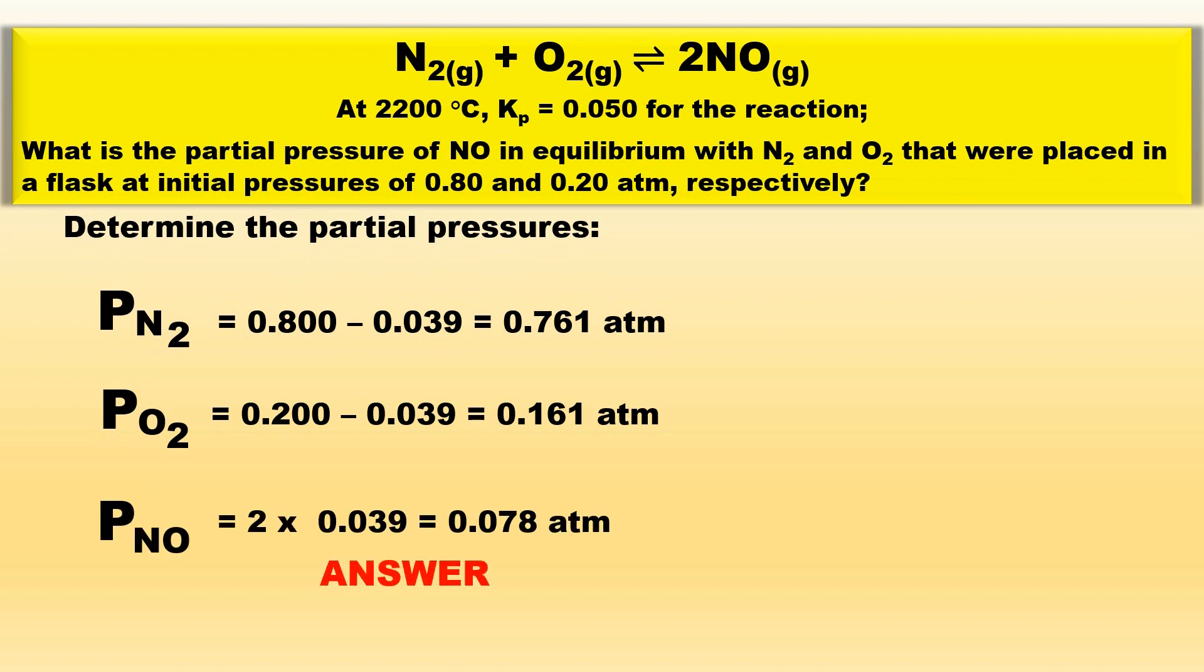And the PNO, the pressure of the nitrogen monoxide, is equal to 2 times 0.039, which is equal to 0.078 atm. This is the answer to the practice problem.